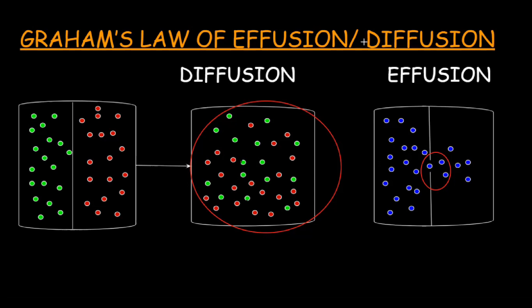Graham's law is basically related to the phenomena of diffusion and effusion. It relates the rates of diffusion and effusion with the density and molecular or molar mass of the gas. Graham found that diffusion and effusion are affected by changes in density or molecular mass of the gas.